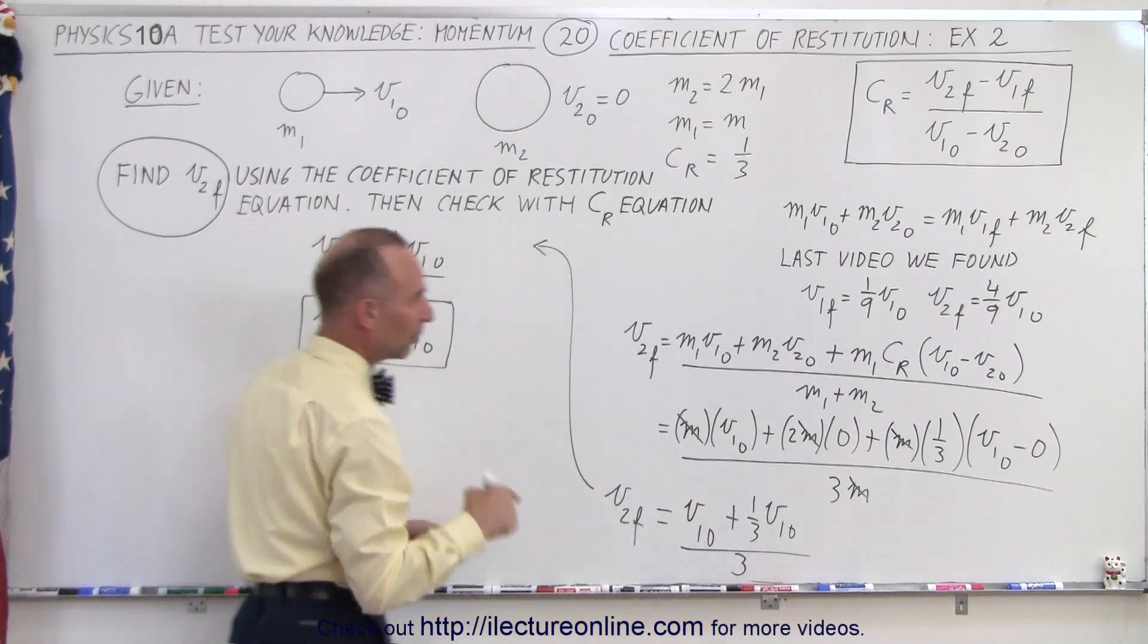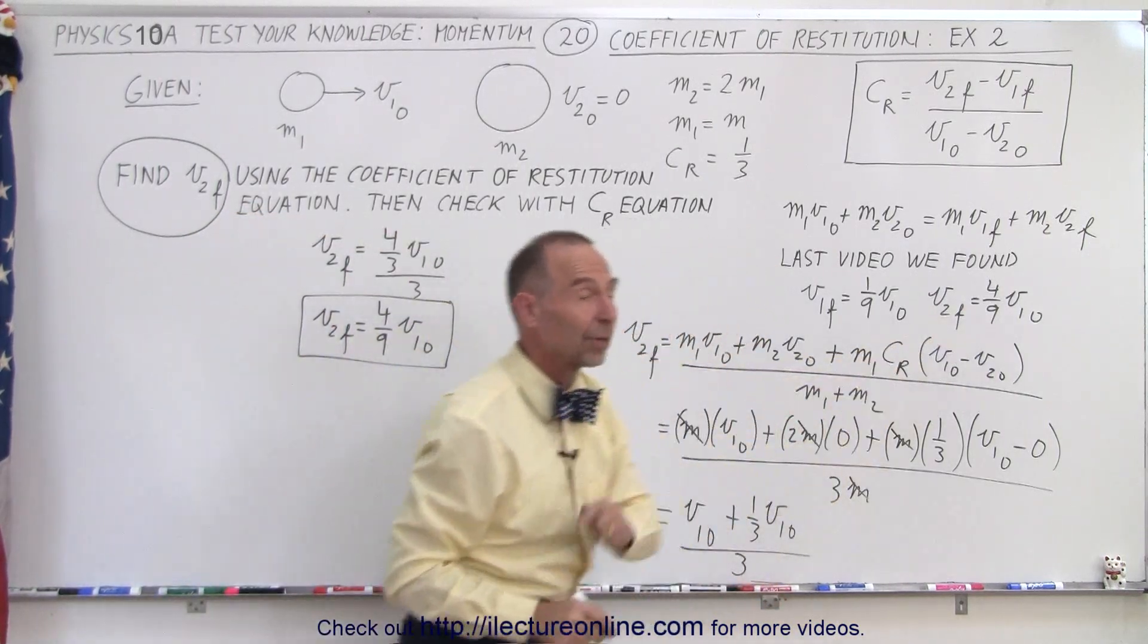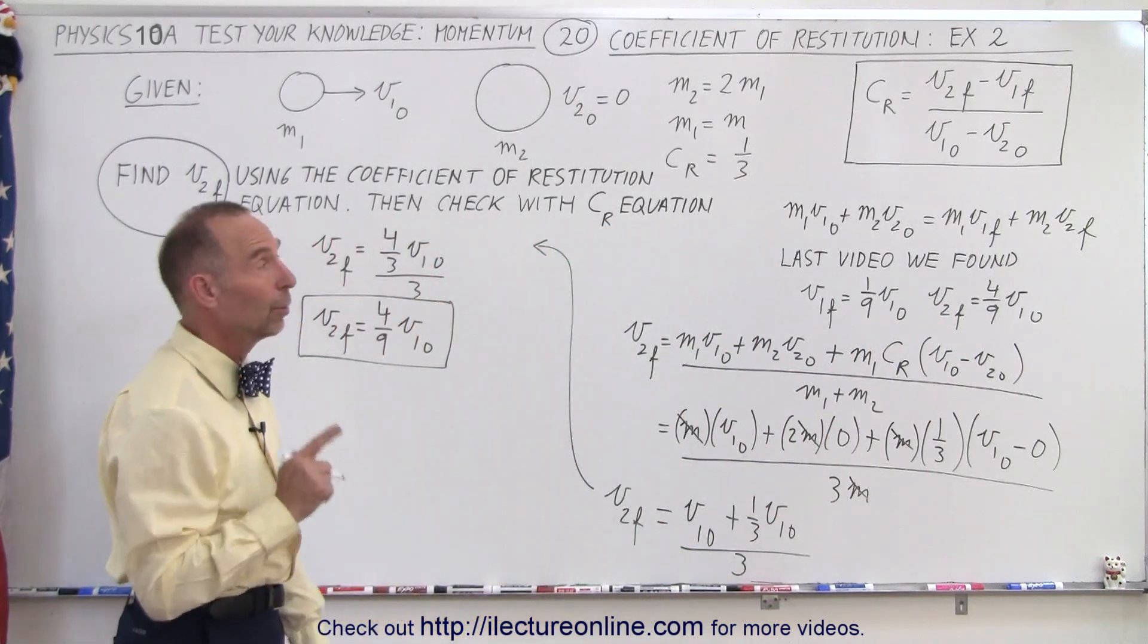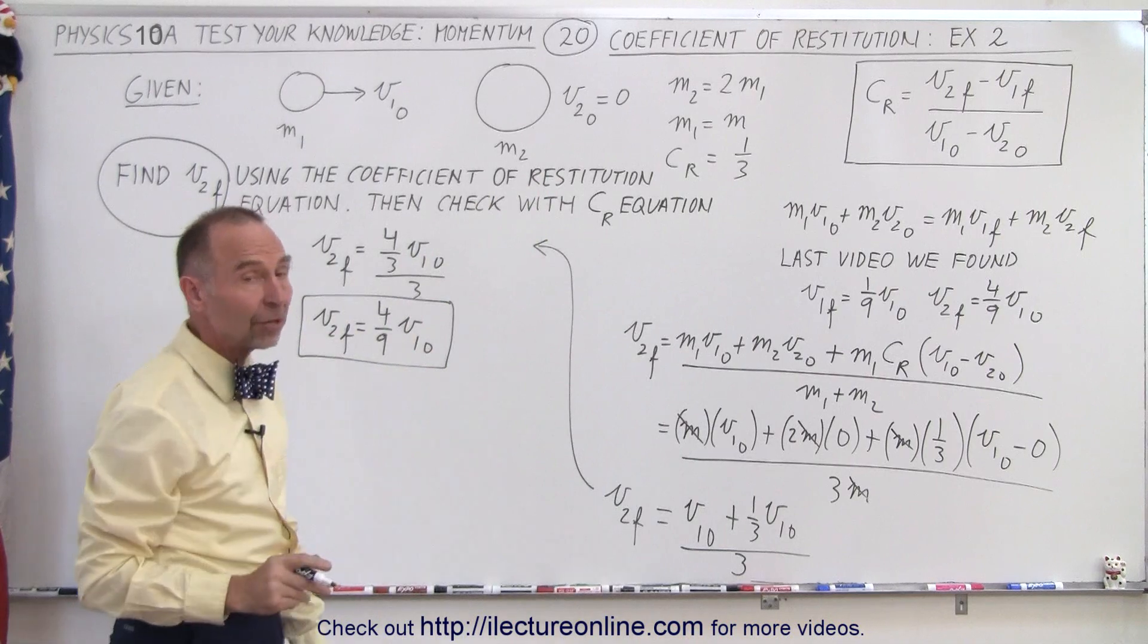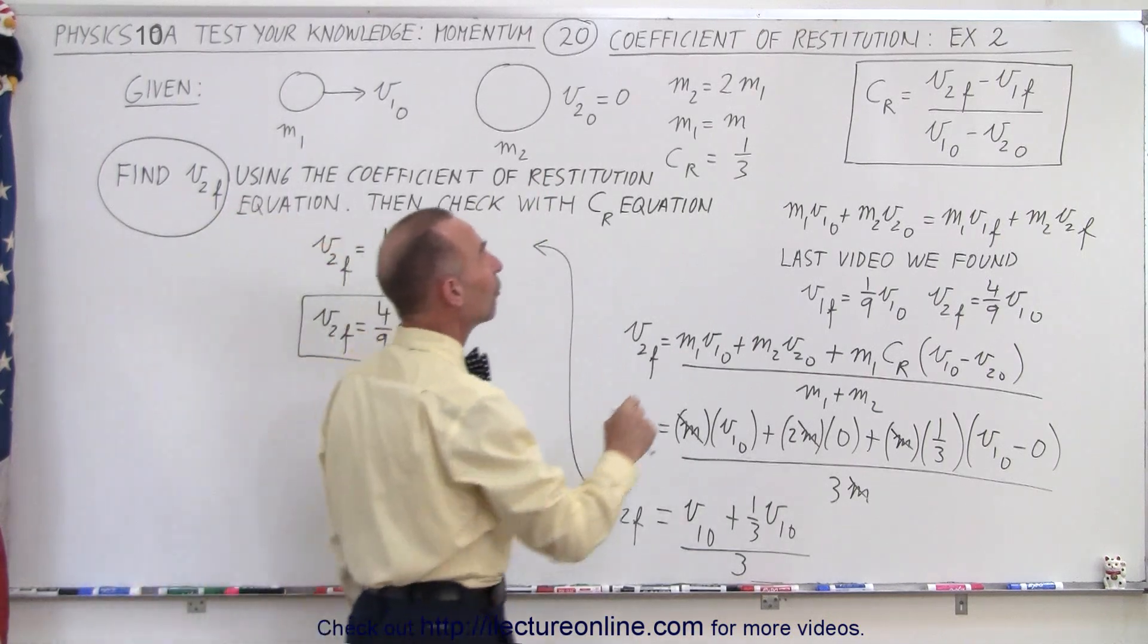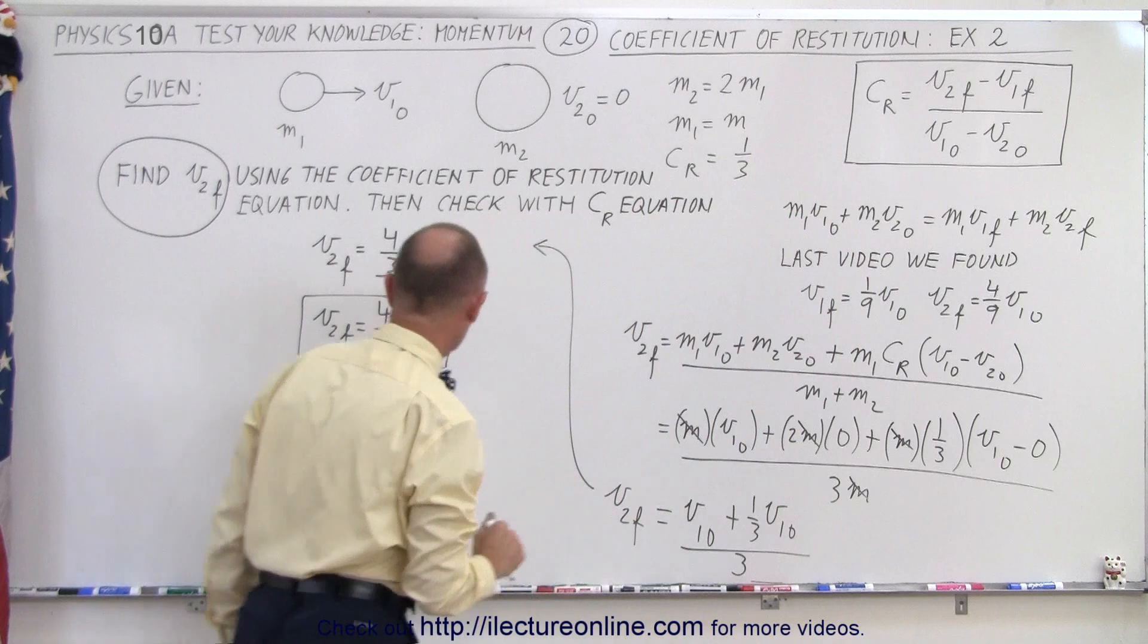Now let's go ahead and plug all those values back into the original equation to see if the coefficient of restitution indeed will come out to be one-third.